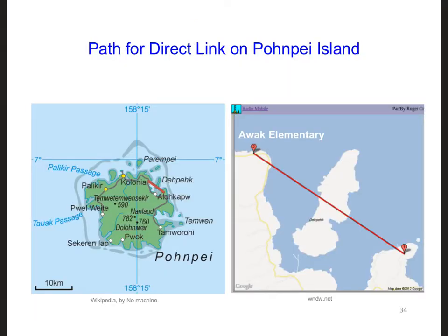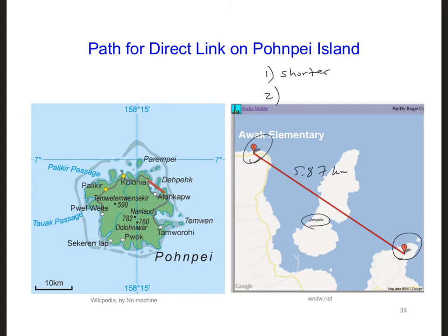In this case, we want a link that extends between two different points on Pompeii Island, which already has a fiber optic cable going to it. Point number two is Awok Elementary, and point number one is where we have an Internet access point. The line-of-sight distance between these two points is 5.87 kilometers, and this line-of-sight path crosses Depik Island. There are perhaps two things that are noticeably different for this link: the propagation path is shorter, so the Earth's curvature will have less of an effect, and the propagation path is not necessarily clear.